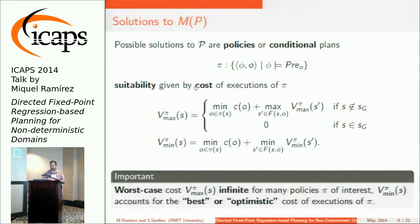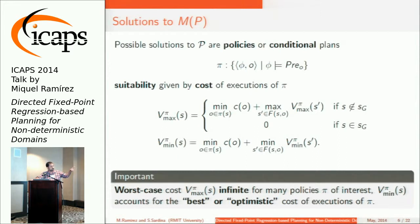The solutions to these non-deterministic models are policies or conditional plans. In our paper, rather than using deterministic policies — the most common in the literature — we work with non-deterministic policies, very much as MVP did back in the day. The suitability of these policies is given by the cost of their executions, described first in the Bellman equation for non-deterministic state models — basically the worst-case cost to reach the goal — and the min-min relaxation, which is the optimistic expectation of how many actions you will need to do to reach the goal.